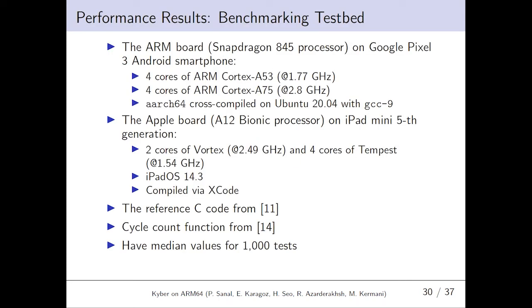Performance results. The benchmark results were measured both in ARM and Apple chips. We use ARM board on Google Pixel 3 smartphone. Performance results are taken by using Cortex-A75 processors only. The executable is AARCH64 cross-compiled on Ubuntu with GCC9. We also use Apple board in iPad mini 5th generation. The performance results are taken using Vortex processor and iPad OS. The reference C code is originally obtained from the clean format of Kyber Round 3 submission. We use cycle counts obtained from Microsoft's SIDH library. Results shown in the table later for 1000th test.